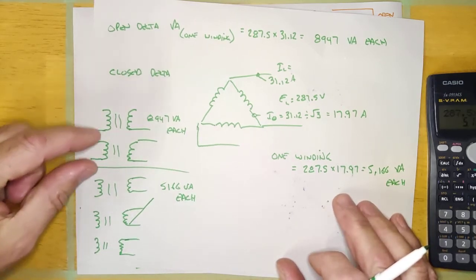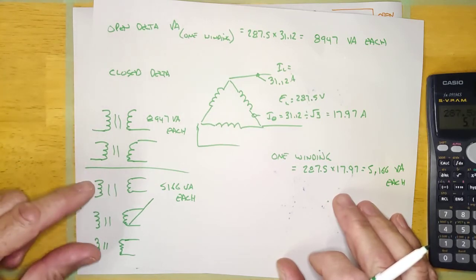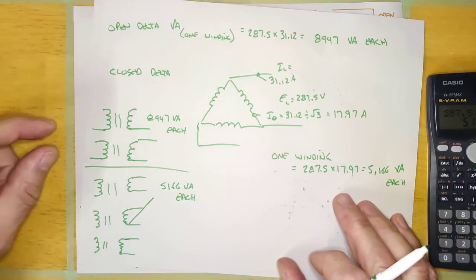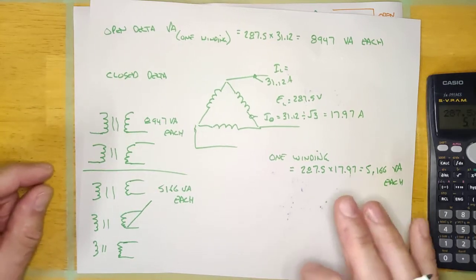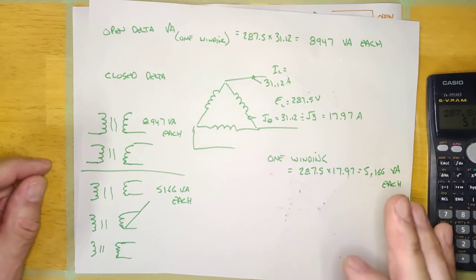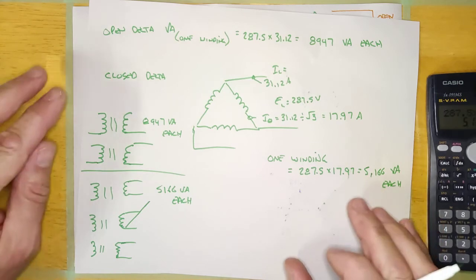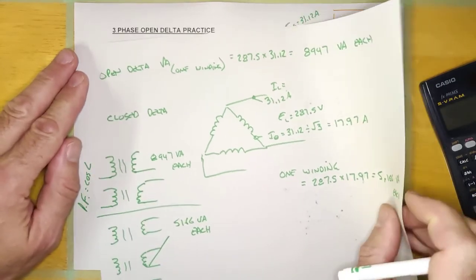And it's going to come down to economics. Is two of these cheaper than three of these, or three of these cheaper than two of those? And if this is cheaper, you know, might as well build it open delta. And if this is cheaper, you might as well build it closed delta. Other than that, they're going to work exactly the same way, or at least feed the load exactly the same way guys.